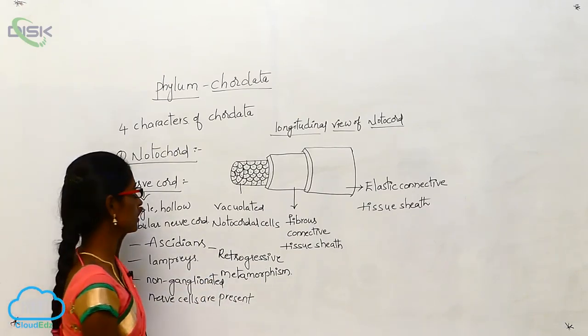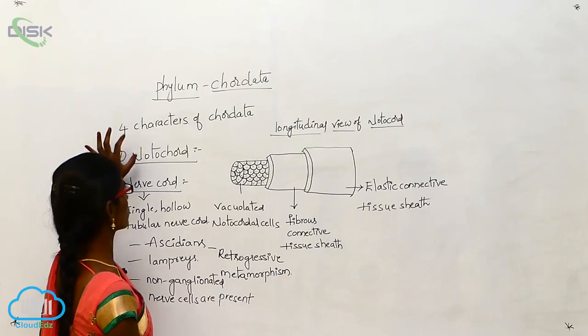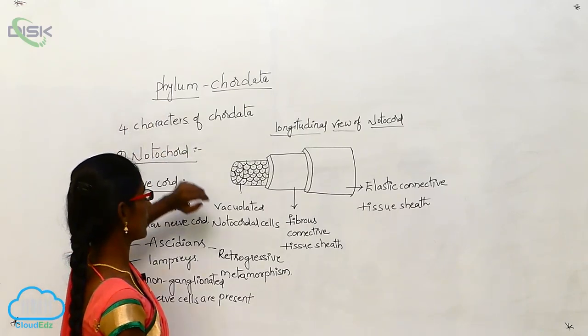So the first two characters of Chordata are: notochord, and the nerve cord, which is a single hollow tubular nerve cord with non-ganglionated nerve cells.